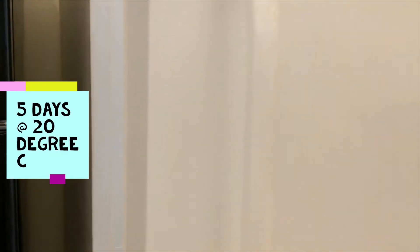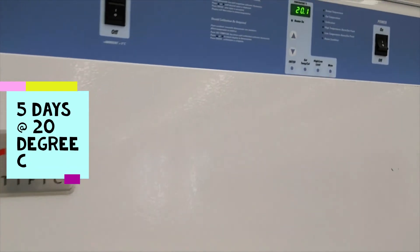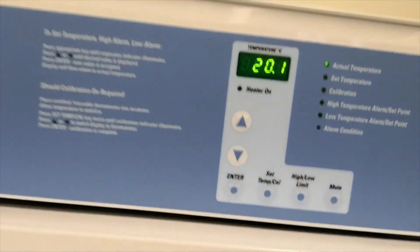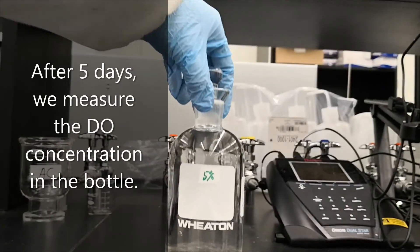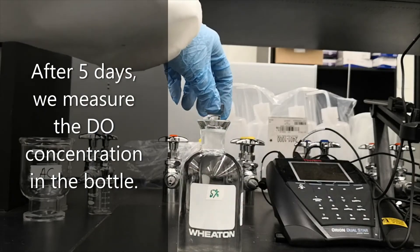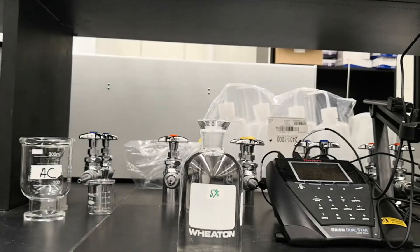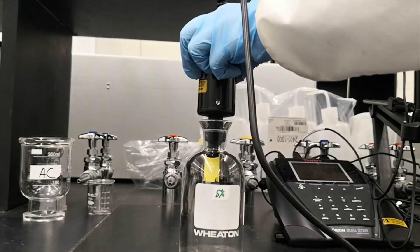We are going to keep BOD bottles in the incubator for 5 days and temperature will be 20 degrees C. After 5 days, we measure the DO concentration in the BOD bottle to see the changes in DO concentrations.